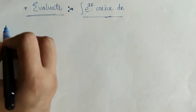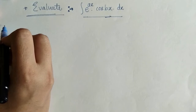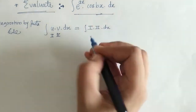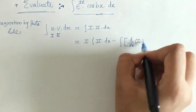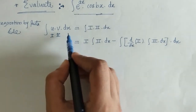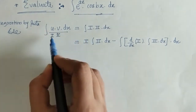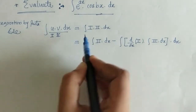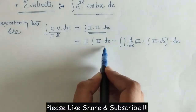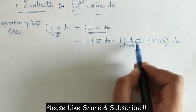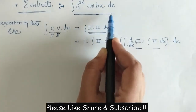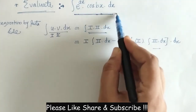First we will write down the rule of integration by parts. When we have two functions of variable x, we call these the first and second function. The rule is given by: first function into integral of second, minus integral of derivative of first function into integral of second. We will apply this rule of integration by parts to evaluate this integral.